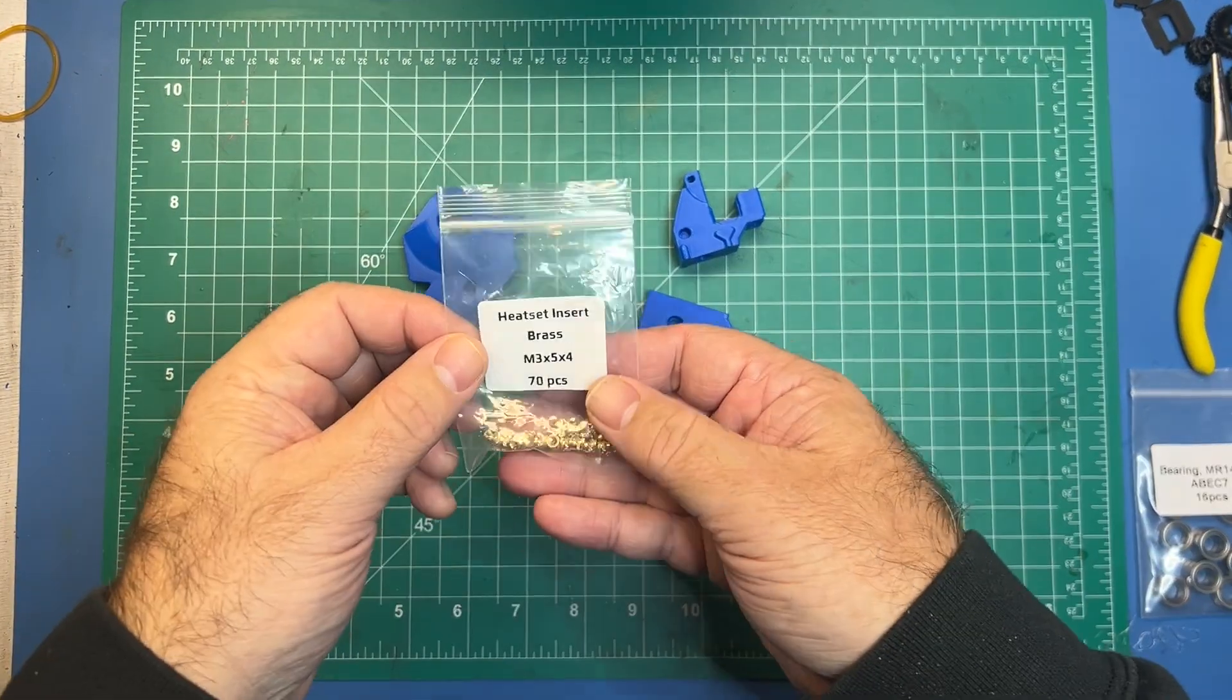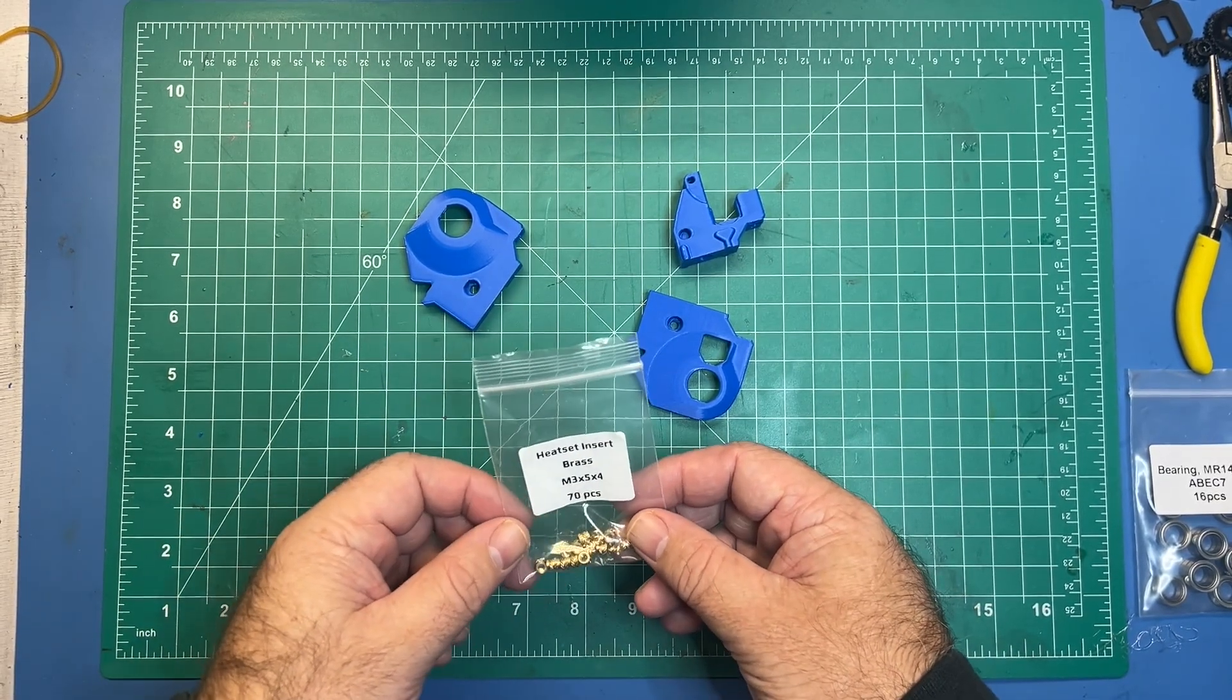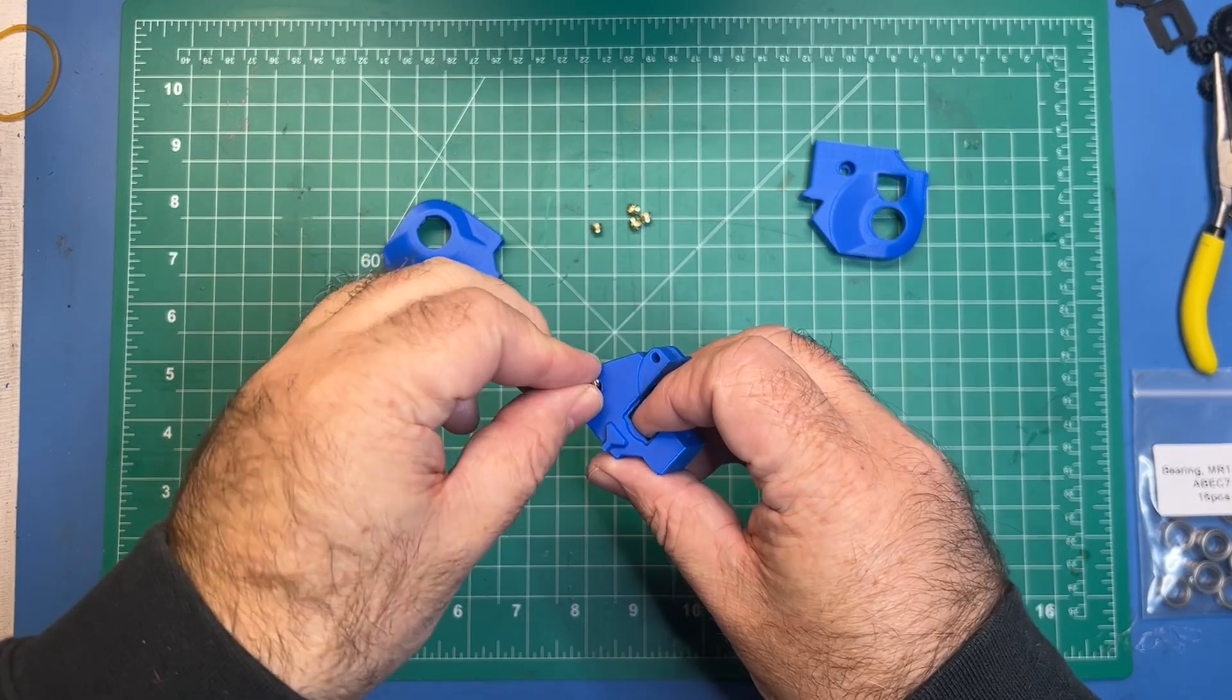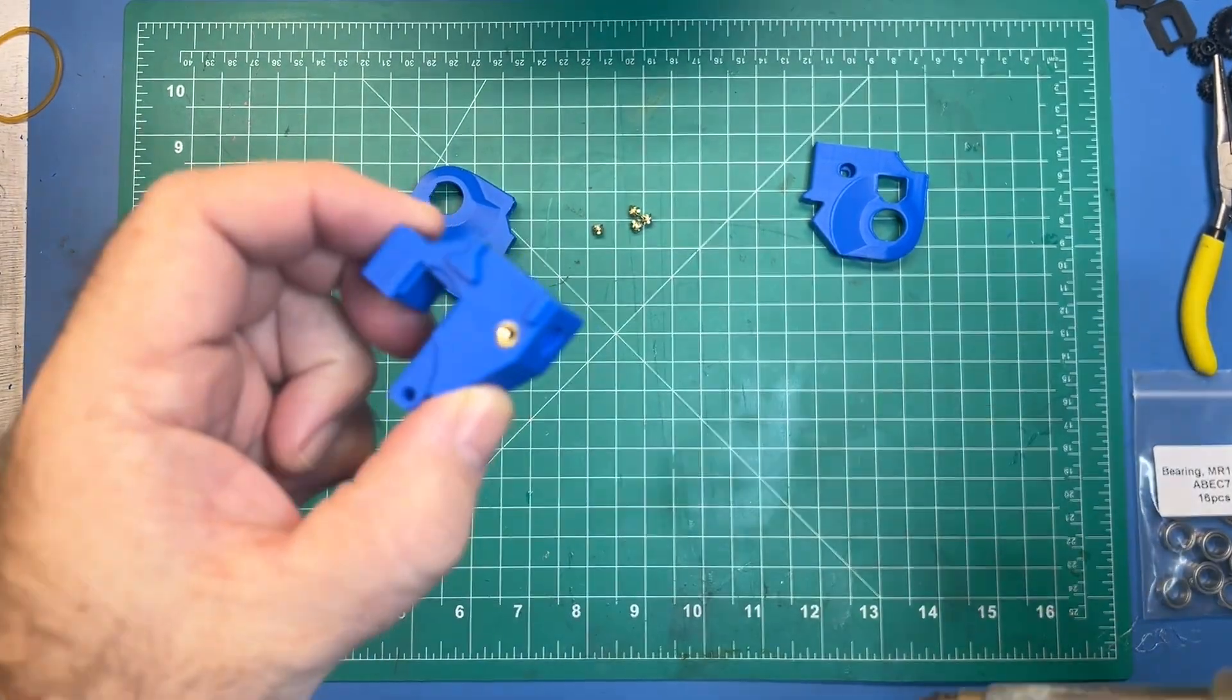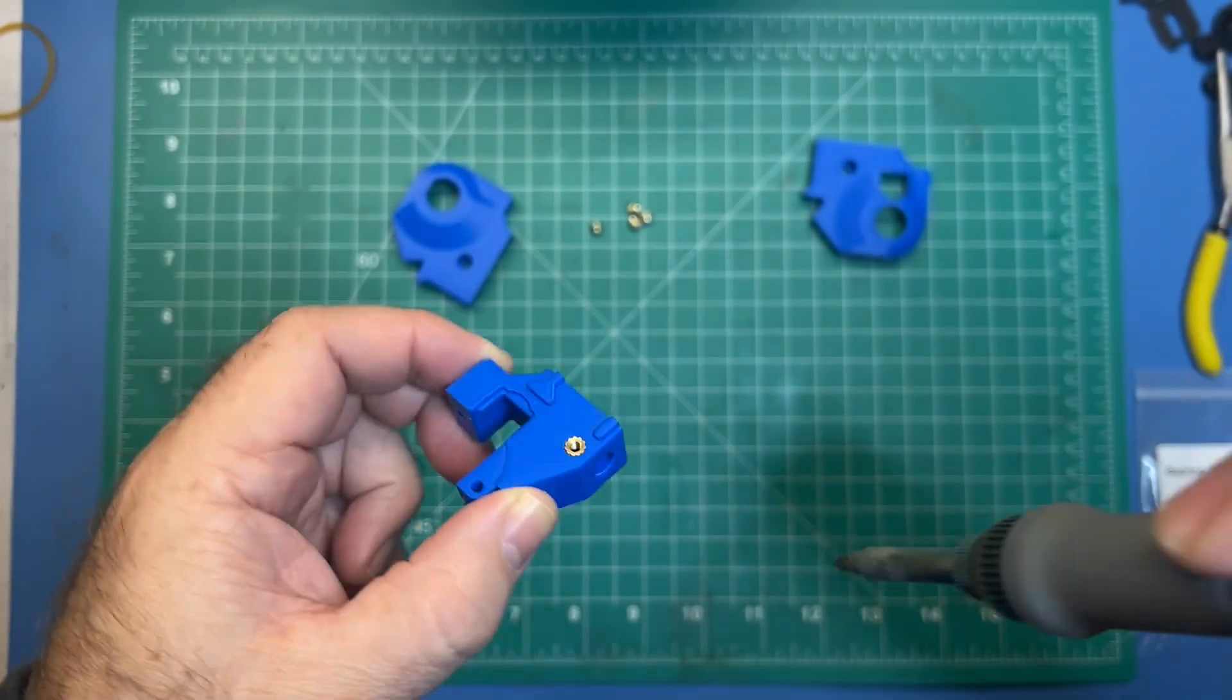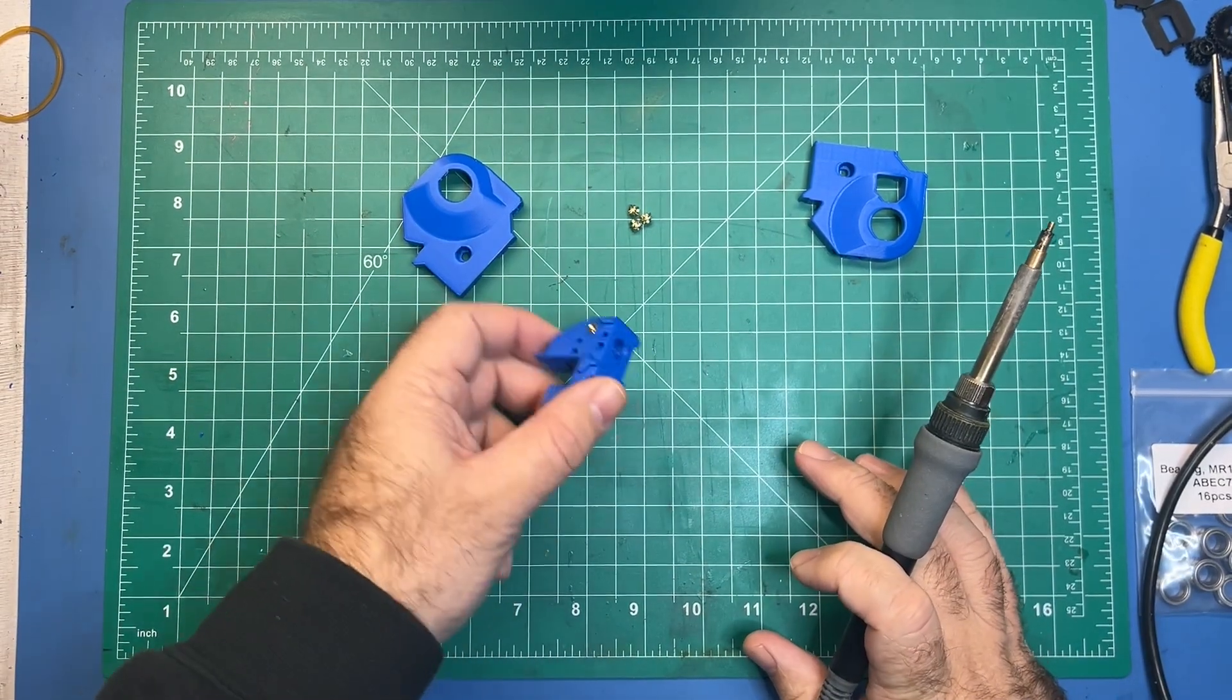The next step you want to get your heat inserts out and go ahead and power up your soldering iron. I use a temp of about 190C. You will need five heat inserts for this step. I'm going to go ahead and set them in and get going here. And you want to make all these heat inserts pretty much flush with the face of the part. Then we'll repeat and do the other side. Okay that's it for that piece.